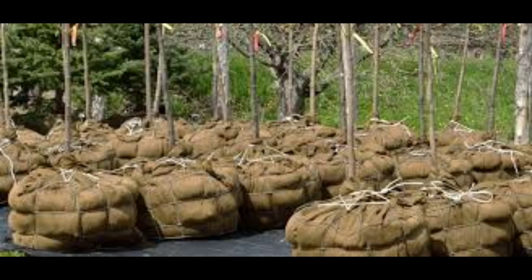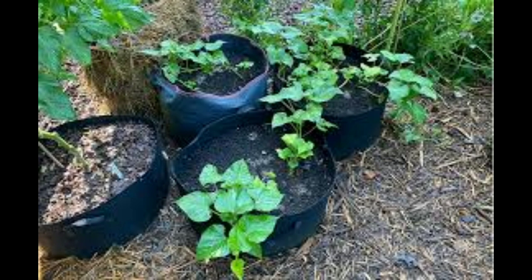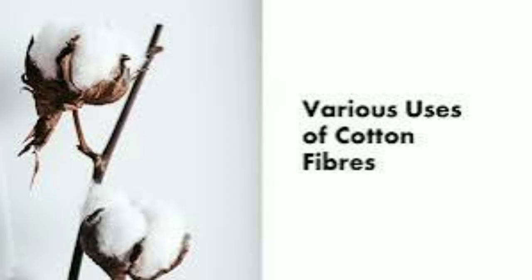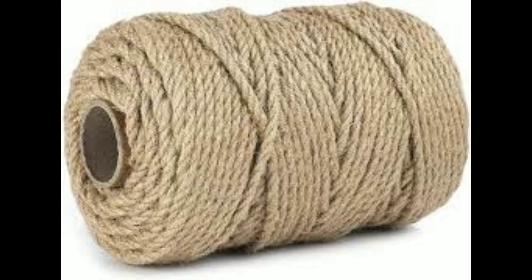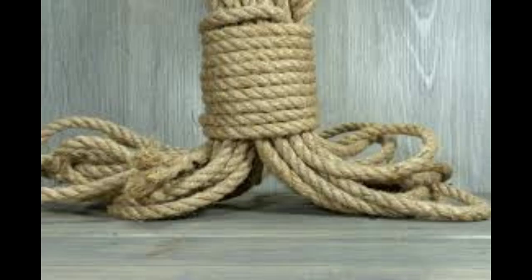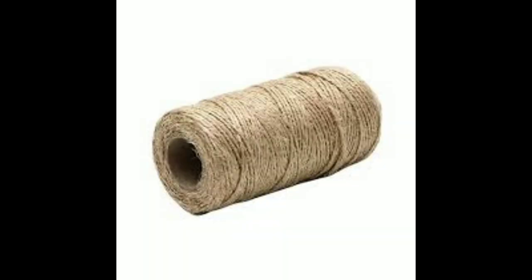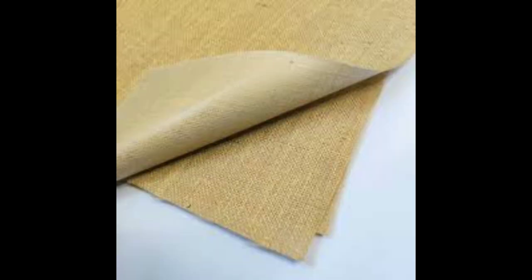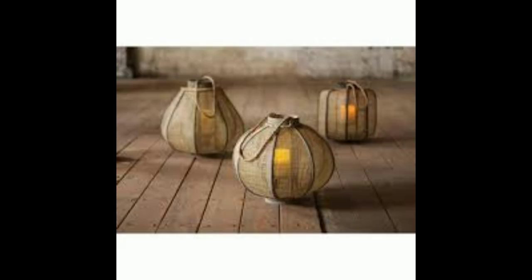For example, jute is used to make containers for young saplings which can be planted directly along with the containers. The fibers are used alone or blended with other types of fibers to make twine and rope. The coarse ends of the plants are used to make inexpensive clothes. On the other hand, very fine threads of jute can be separated out and made into imitation silk. Jute fibers are also being used to make pulp and paper, and jute has many advantages as a home textile, either replacing cotton or blending with it.